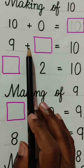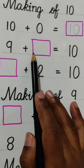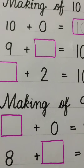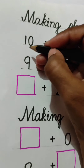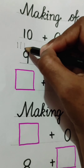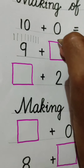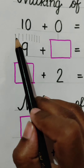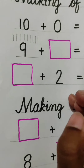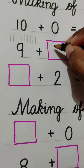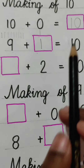Next question: 9 plus blank is equal to 10. 9 में हम लोग क्या add करेंगे कि हमारा 10 आए? उसके लिए पहले हम लोग 9 lines draw करेंगे — 1, 2, 3, 4, 5, 6, 7, 8, 9 — then draw up to 10. So यहां पर कितनी line बच रही है? 1. So we will write here 1. 9 plus 1 is equal to 10.